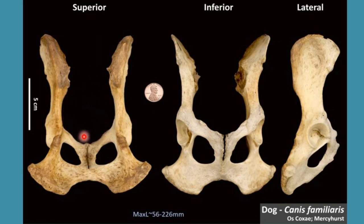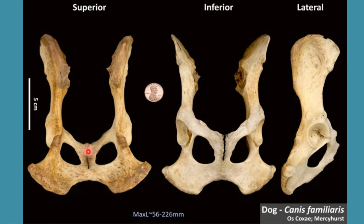The pelvic outlet is the caudal opening of the pelvic cavity, and it is formed by the coccygeal vertebra, ischial arc, and ischial tuberosity. These three structures combinedly form the pelvic outlet of dog.